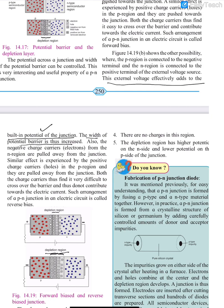In reverse bias, the negative charge carriers, that is electrons from the N region, are pulled away from the junction. Similarly, holes in the P region also move away from the junction. So both charge carriers find it difficult to cross the barrier and they will not contribute to the electric current.